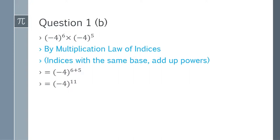Question 1b: (-4)^6 multiplied by (-4)^5. The same multiplication law of indices applies — we add the powers. The base (-4) is common in both terms, so we add powers 6 and 5 to get (-4)^11. That is the answer.